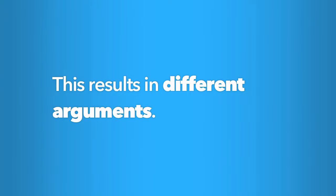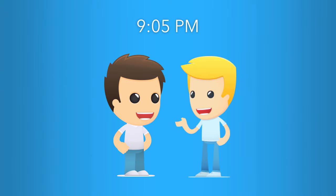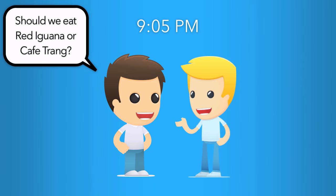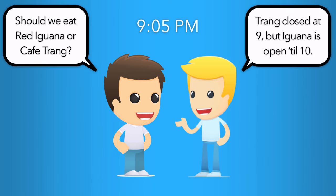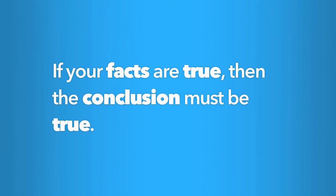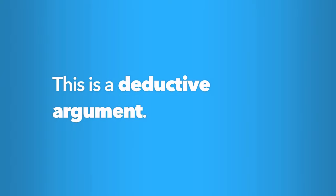Facts and opinions have different relationships with the conclusions that are drawn. For example, let's say it's currently 9:05pm when your friend asks should we eat at the Red Iguana or Cafe Trang. You reply: Cafe Trang closed at 9, but the Red Iguana is open until 10, so we need to go to the Red Iguana. If the facts are true, then your conclusion has to be true — your only option is Red Iguana. An argument in which the conclusion necessarily follows from the premises, such that if the premises are true the conclusion is also true, is a deductive argument.